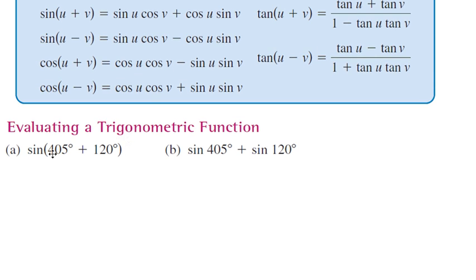For part A, sin(405° + 120°), I'm going to add these angles together so I have one angle to deal with. 405 plus 120 gives us 525, so we have sin(525°).